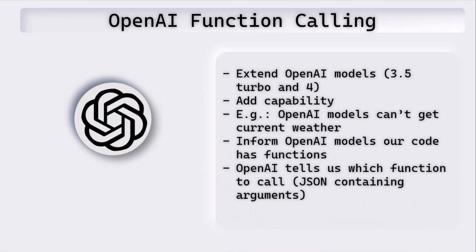Before jumping into the code, let's understand what OpenAI function calling is. The way I think of OpenAI function calling is it provides an ability to extend the OpenAI models — basically adds the capability to get real-time information. For example, if you go to ChatGPT today or any other application which uses OpenAI APIs or Azure OpenAI APIs and ask for the current weather, the reply is it won't be able to get the current weather because the model has been trained up till September 2021.